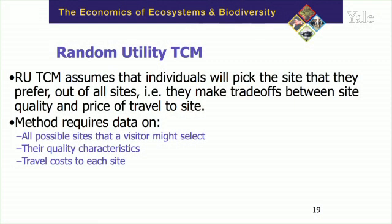The state of the art in travel cost is what's called the random utility travel cost model, and I'll say more about random utility theory when we talk about choice experiments. Basically, it means you have a choice about which site you go to. If you're thinking about forests around Yale, there might be five different forests within an hour's drive, and as someone going walking in the forest, you choose which one you prefer based on the attributes of that forest.